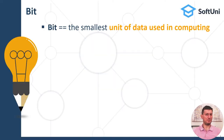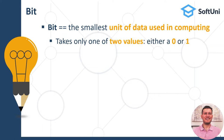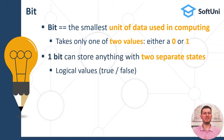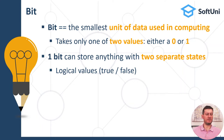So what are bits? Bits are the smallest units of data used in computing. A bit is a single unit of data which takes only two possible values: 0 or 1. One bit can store anything which has two separate states.